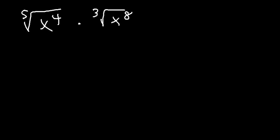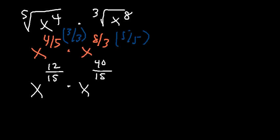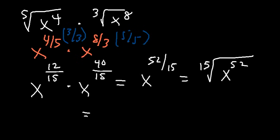How many times does 15 go into 52? At least 3 times since 15 times 3 is 45, and 15 times 4 is 60, which is too much. So we get x cubed with 52 minus 45 equals 7 remaining: x cubed times the 15th root of x to the 7th. That's the answer.